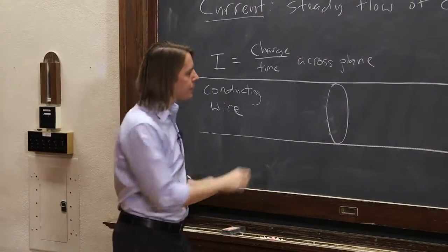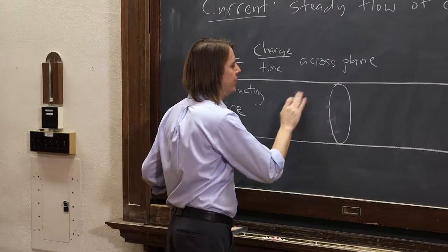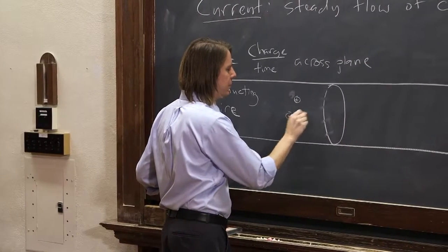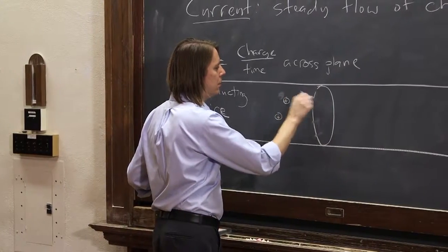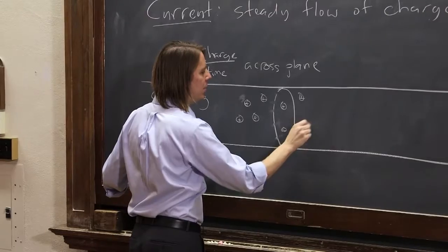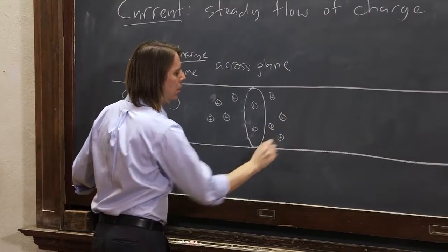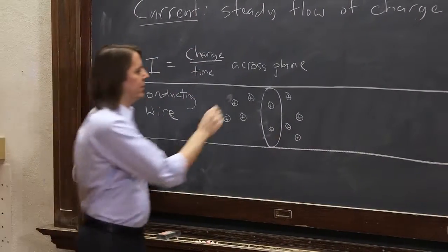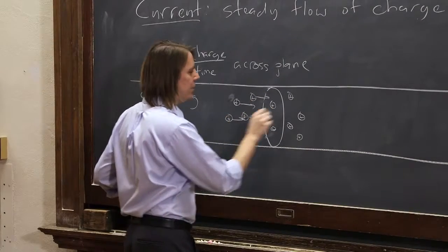Cross-section of the wire, and then I'll think about all the little charge carriers. So here I'll have a bunch of little positive charges. And if they are flying along at some velocity, due to the electric field that's being applied, so there they go,